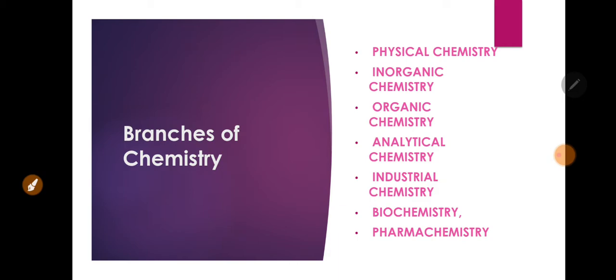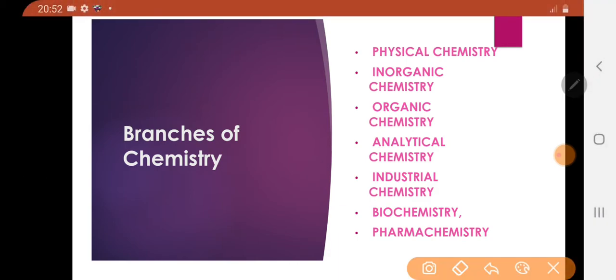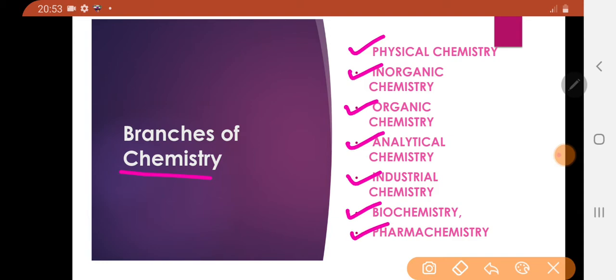Next part of the lecture: what are the branches of chemistry? The first one is physical chemistry. Second, inorganic chemistry. Organic chemistry, analytical chemistry, industrial chemistry, biochemistry, and pharma chemistry — these are the branches of chemistry.